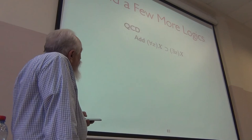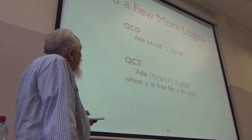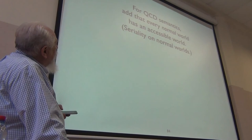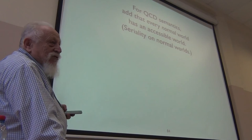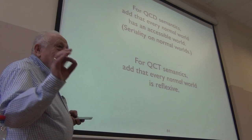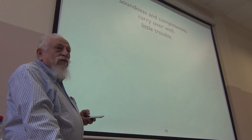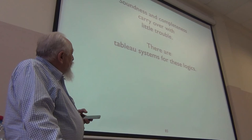One can go a little further in this direction — add for-all implies exists for the D version, or add instantiation for the T version. On the semantics you assume seriality for D, reflexivity for T — but again you allow non-normal worlds. The soundness and completeness proofs carry over, there are tableau systems, and there are interpolation theorems for these as well.